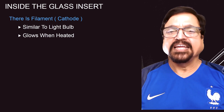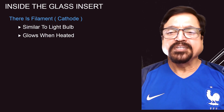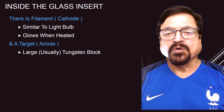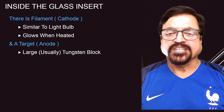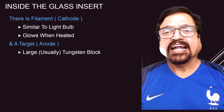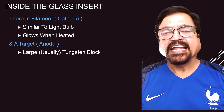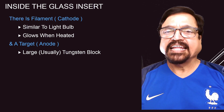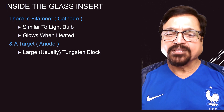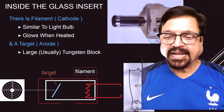Now let's briefly see what the other structures are. There is a cathode which is similar to a bulb — it glows when heated and emits an electron cloud by a thermionic emission process. This electron cloud is accelerated by the potential difference and attracted towards the anode. From there, the accelerated electrons get decelerated and are converted into X-rays. So what we have here is a filament cathode and a target anode.